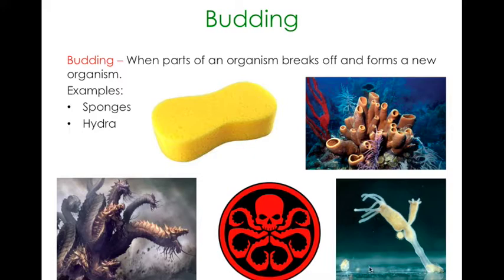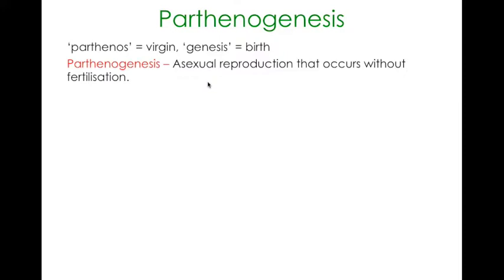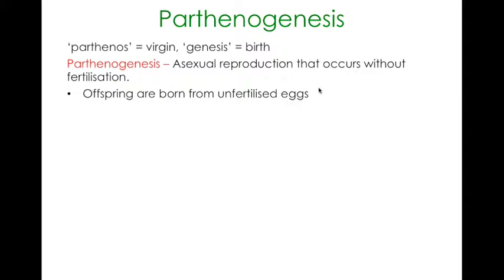Parthenogenesis is a little bit more complex. It is slightly different from all the ones you've seen before because it still involves an egg. Parthenogenesis literally means virgin birth — parthenos meaning virgin, genesis meaning birth. So parthenogenesis is giving birth without the fertilization method; it's asexual reproduction that occurs without fertilization. The offspring are born from an unfertilized egg — the egg has not joined with the sperm, but can still produce young. The offspring are still genetically identical to the parent.